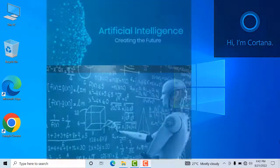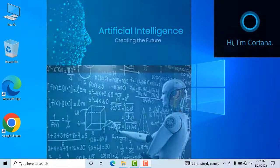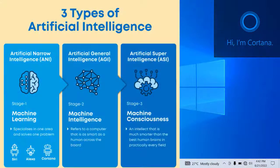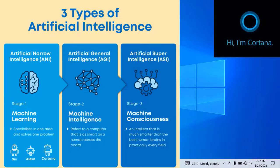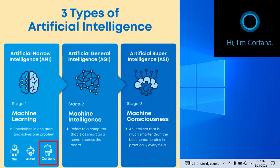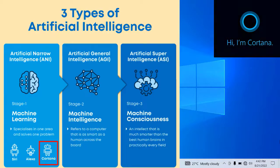Cortana is an artificial intelligence based app. There are three types of artificial intelligence. Cortana lies in the artificial narrow intelligence stage, which specializes in one area and solves one problem.